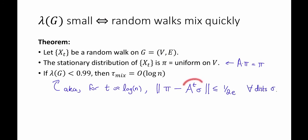Here, remember that A to the t times sigma, this is the distribution that the random walk is in after taking t steps. Here, we're using the fact that A, the normalized adjacency matrix, is precisely the transition matrix for this random walk.